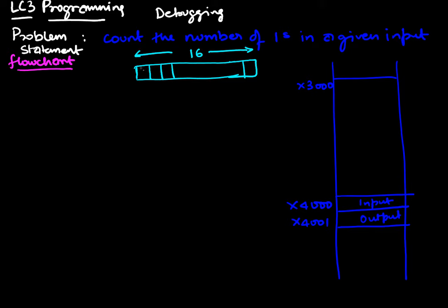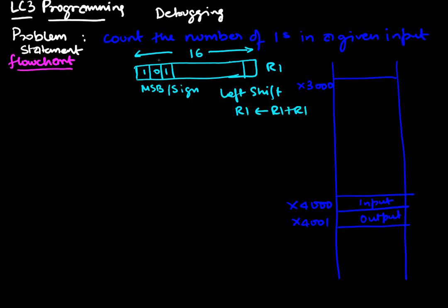If there's a one in the most significant bit position, I can detect this because a number with a one in the most significant bit — which is also the sign bit — will be negative. If it's positive or zero, that bit is a zero. So I'll use that knowledge, and once I've queried the MSB, I'll shift left by one. A left shift is accomplished by adding r1 to itself: r1 = r1 + r1.